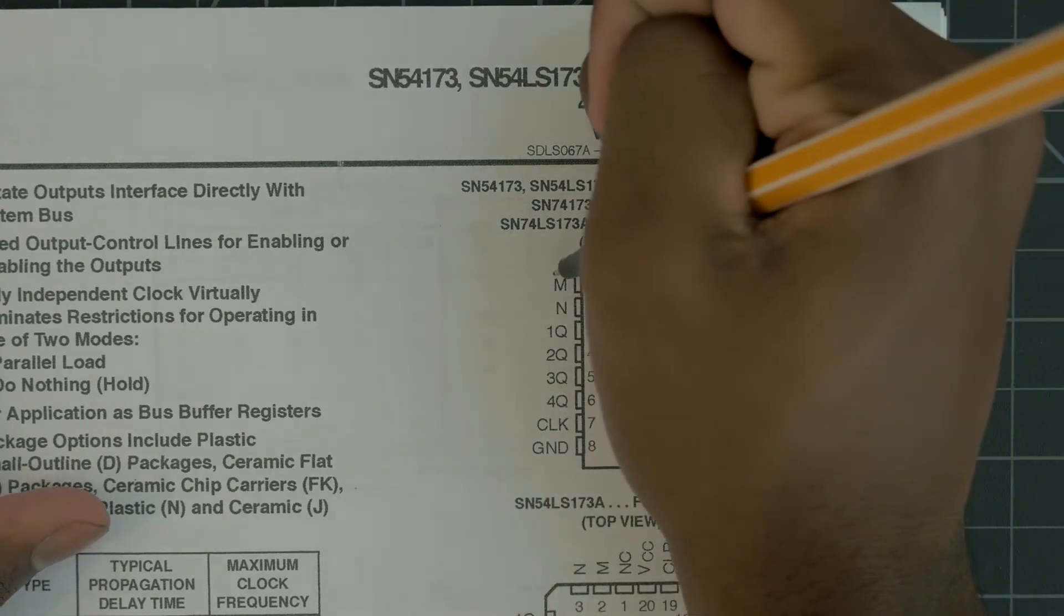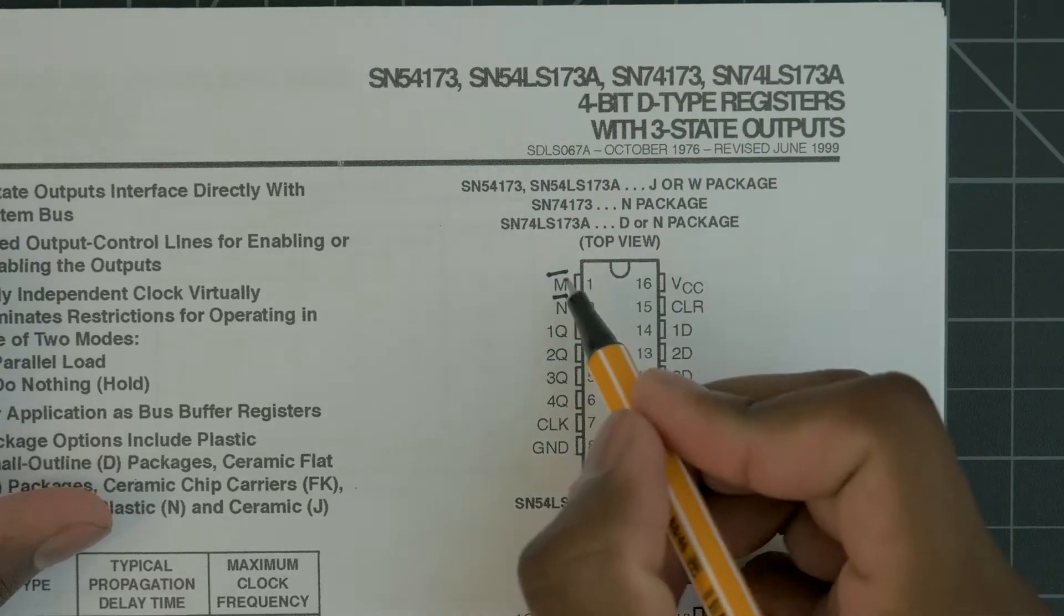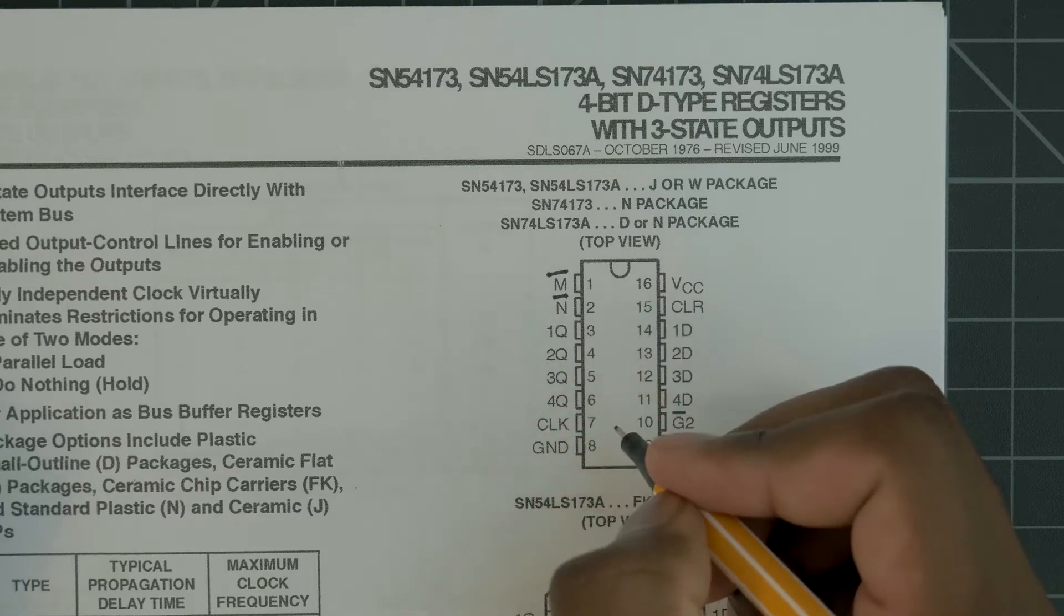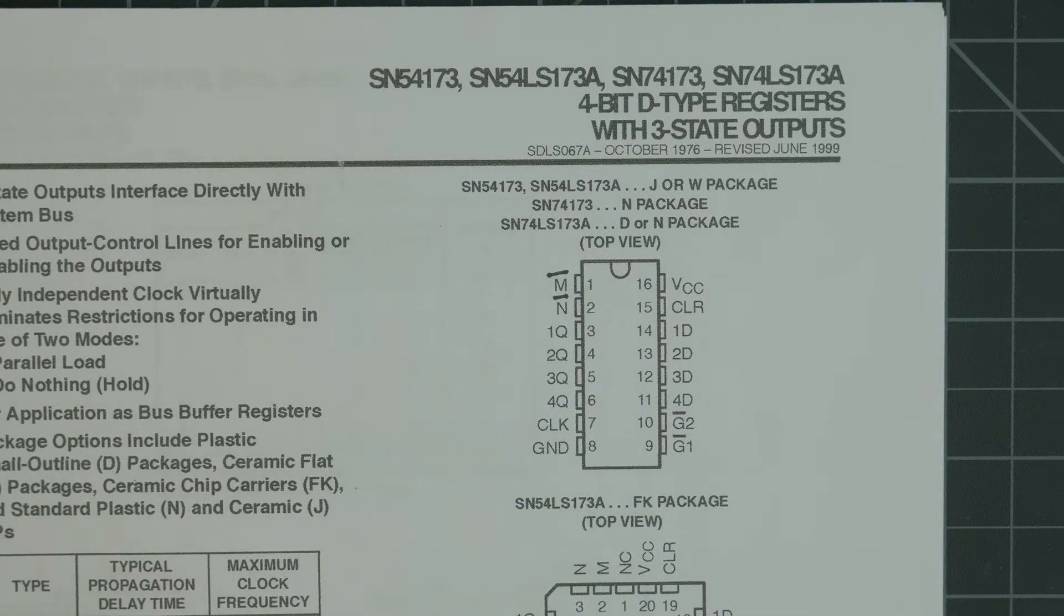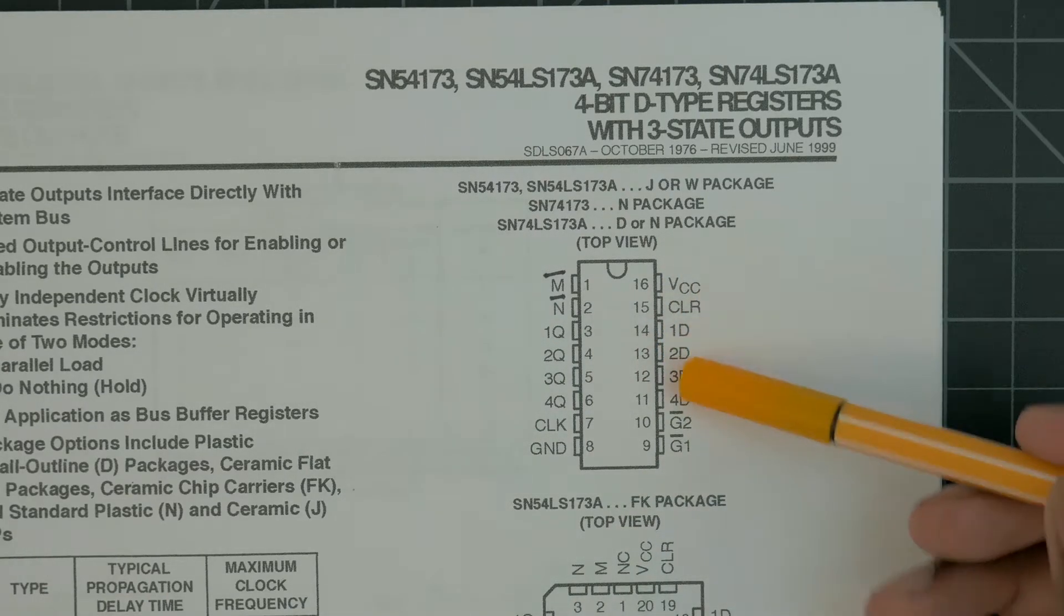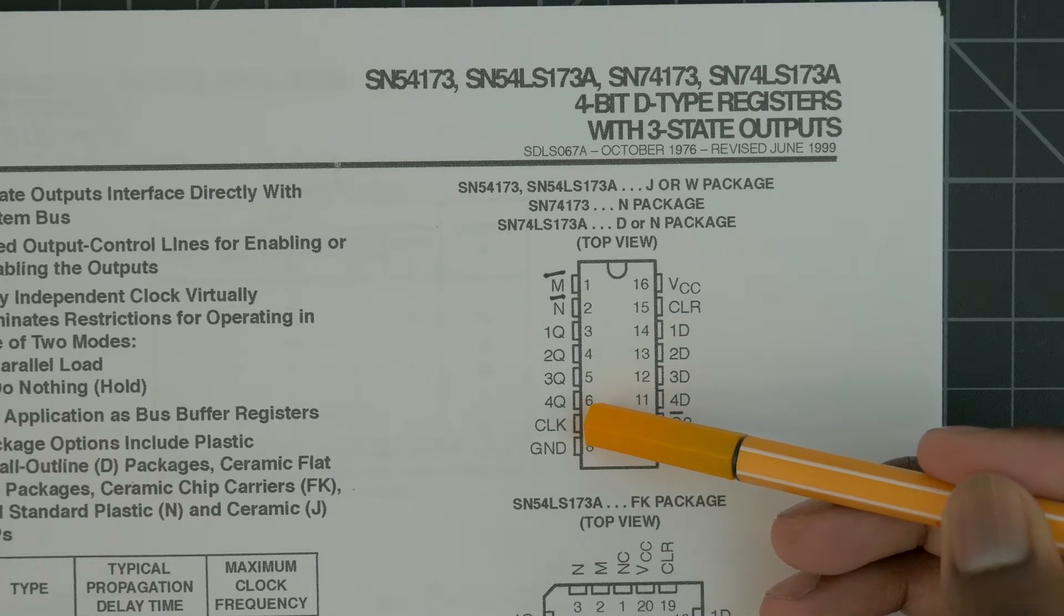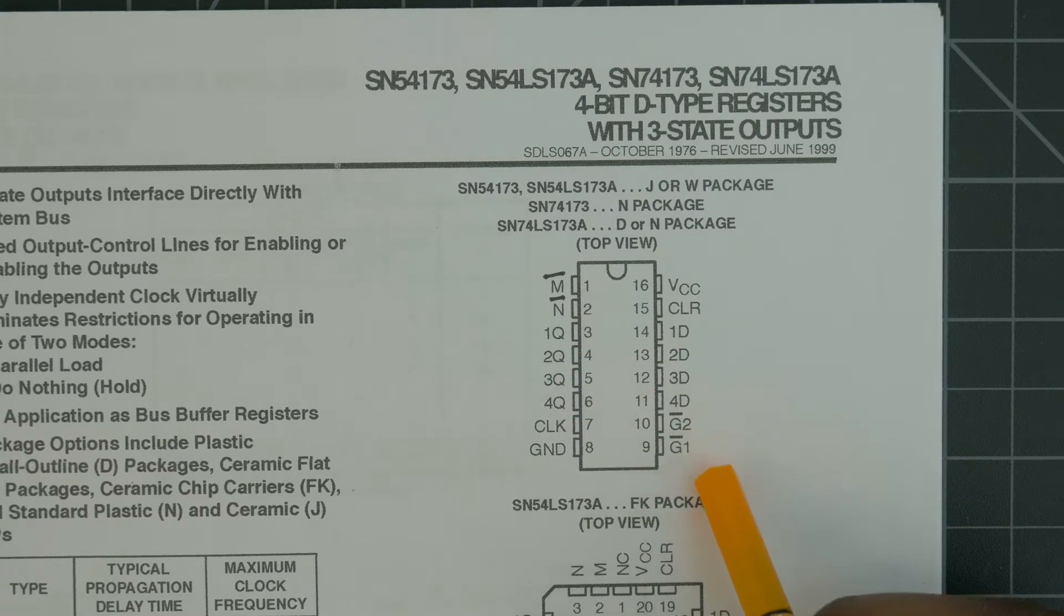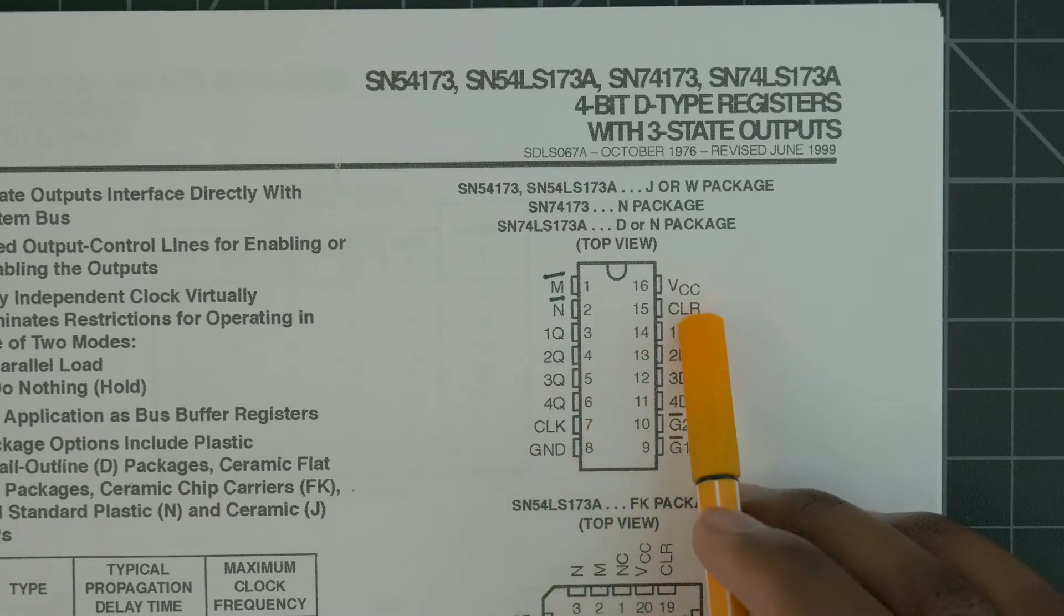Now I know here it doesn't say it, but M and N are actually active low, and they're ANDed together. So if you want the three-state output on, meaning that the Q is showing the value that's inside the register, then you want M and N both tied to ground. Now remember the way that a D-type register works is it'll only load data from these data lines when the enable line is low and the clock signal is on the rising edge. So the way that we enable this chip is with G2 and G1.